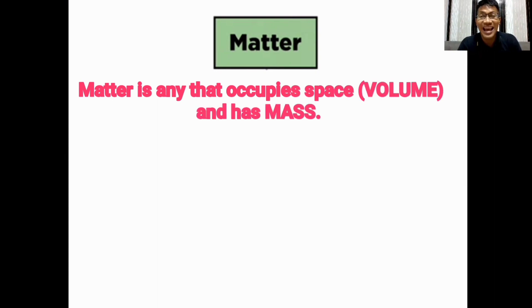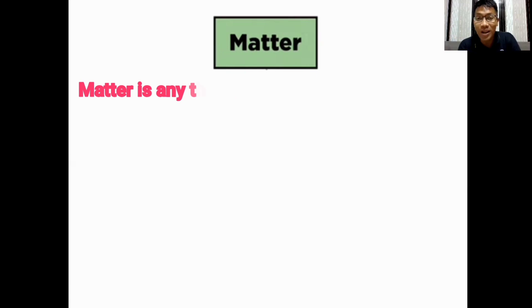Let's start with an overview of this chapter or unit and it's all about matter. Matter is anything that occupies space and has mass. What are the examples of matter? Some of the examples of matter are the air that we breathe, the water that we drink, even our body. It is an example of matter as long as it occupies space or it has volume and it has mass.